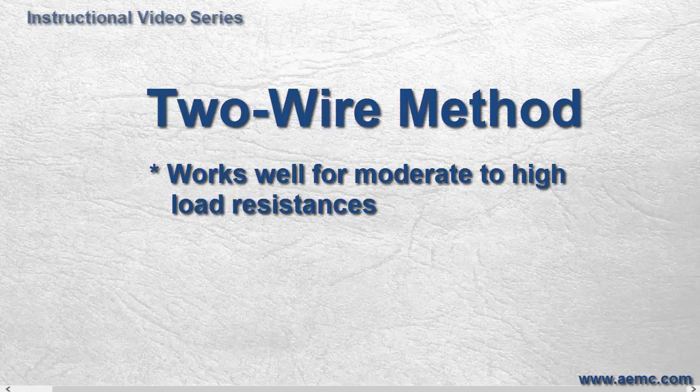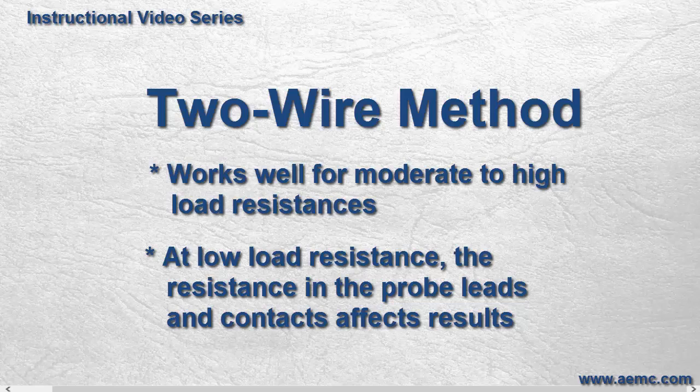The two-wire method works well for moderate to high load resistance or impedance. However, for very low load resistances, the resistance inherent in the probe wiring and contacts can contribute a significant percentage to the overall results, making the measurement of the test load resistance inaccurate.